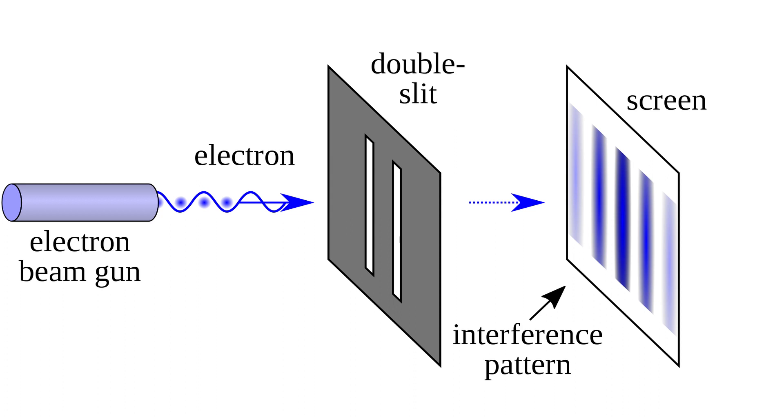Even if we move the detector so that it sits behind the slits, so that effectively the particle has already chosen which of the two slits it will go through, it makes no difference. As soon as the detector is placed in the path, the interference pattern disappears. And when we remove the detector, the interference pattern returns.